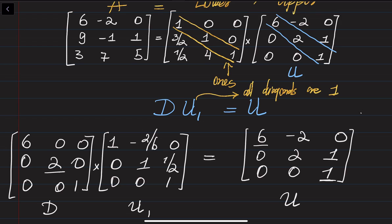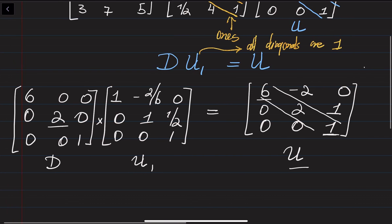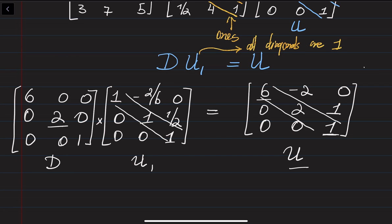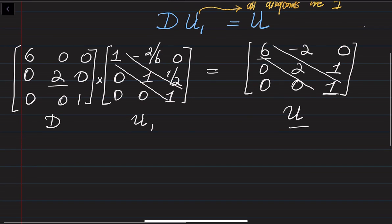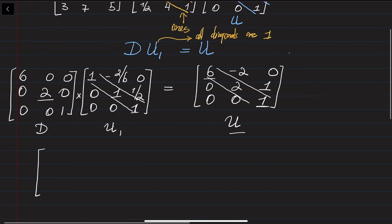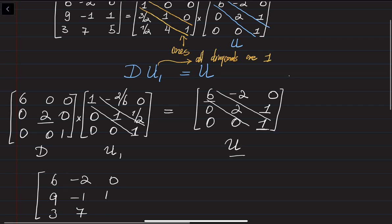So you can write down this U matrix with non-one diagonal entries as a multiplication of a diagonal matrix DU times a U1 matrix where all diagonal entries are equal to one. We are going to substitute the U matrix accordingly. Our original matrix A equals six, minus two, zero; nine, minus one, one; three, seven, five.